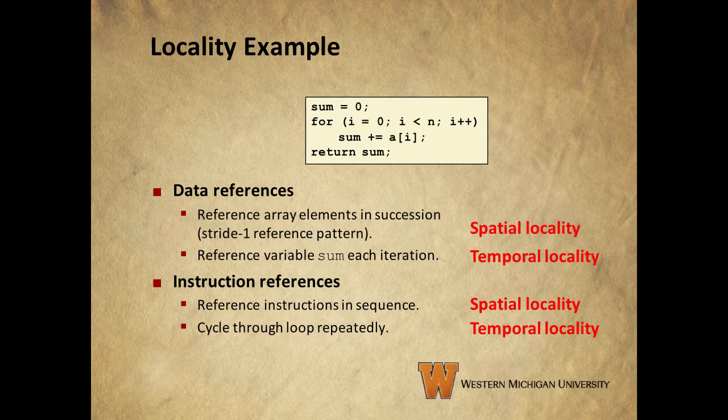Also, in each iteration, we reference the variable sum. Remember that temporal locality means that a recently referenced item is likely to be referenced again in the near future, and the referencing of sum in each iteration is a good example of this.